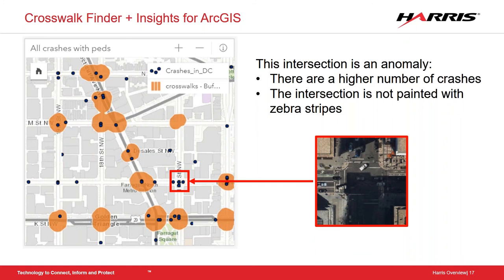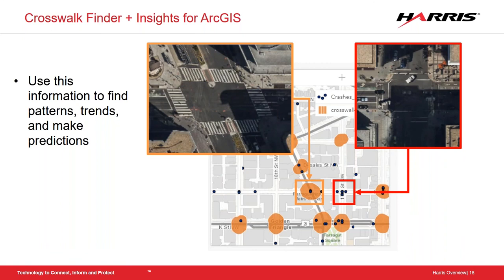We can see that one particular intersection has had a lot of car and pedestrian incidents but is not one of the zebra painted crosswalks. Even though it's just one intersection away from others, it's a much more dangerous location without that zebra paint for pedestrians to cross. We can start using this type of automated detection to look for patterns, trends, and really start making predictions about what we can do to help with city planning — understanding where these interactions may be occurring and getting ahead of that to make decisions ahead of time.